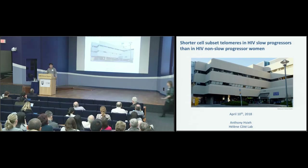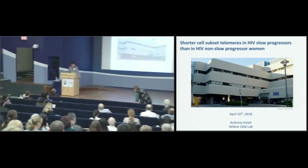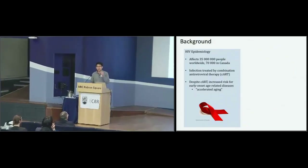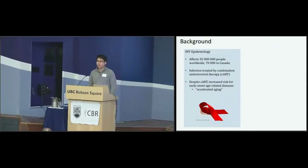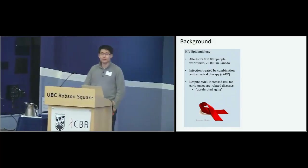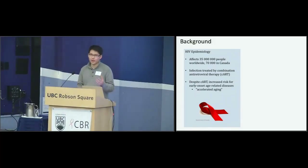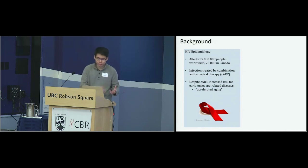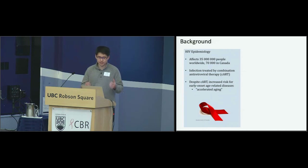Our lab is the only CBR lab that works out of UBC Hospital. I'm going to be talking about HIV today, which affects 35 million people worldwide, 70,000 of whom are in Canada. The current treatment is a combination of three or four antiretroviral drugs that inhibit HIV replication and successfully increase lifespan for people living with HIV. But despite being successfully treated, people who live with HIV are still at increased risk for earlier age-related diseases such as cardiovascular disease, liver disease, osteoporosis, and certain cancers — loosely termed the accelerated aging effect of HIV.